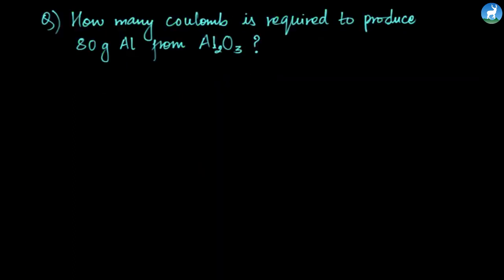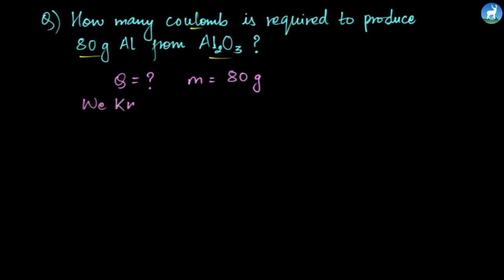Our first question is: How many coulombs are required to produce 80 grams of aluminum from aluminum oxide? So the question asks for how much charge is needed to deposit a mass of 80 grams of aluminum.